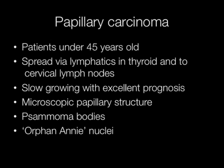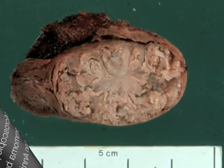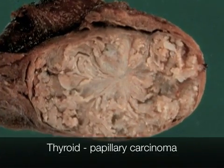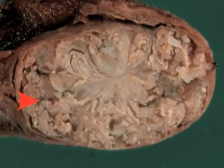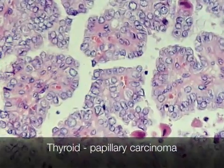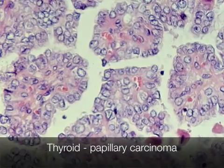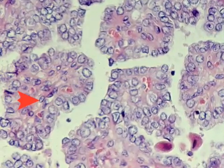Microscopically, they have a papillary structure. They have psammoma bodies and the nuclei have an Orphan Annie appearance. This is the gross appearance of a papillary carcinoma of the thyroid. Here is the microscopic appearance of a papillary carcinoma of the thyroid. You can see the papillary structures.